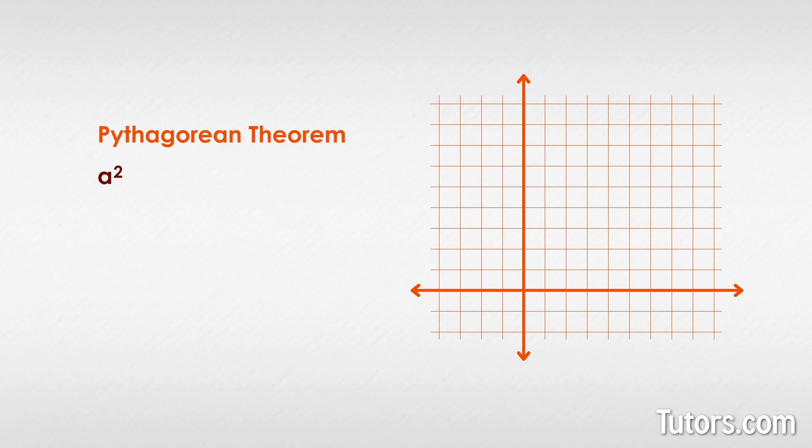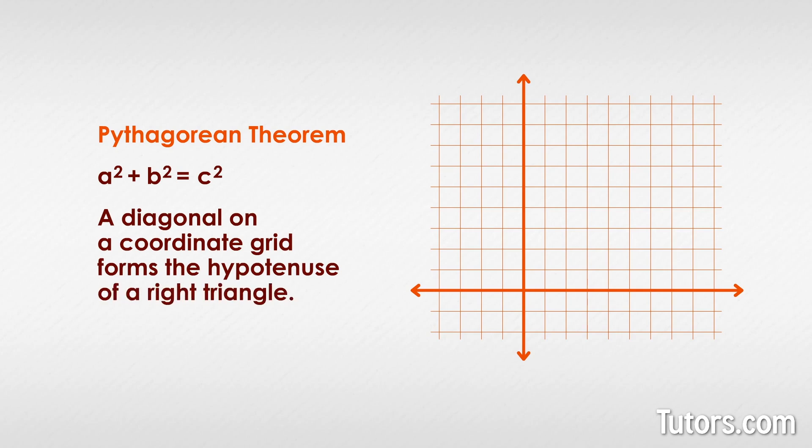The Pythagorean theorem is a squared plus b squared equals c squared for any right triangle. A diagonal on a coordinate grid forms the hypotenuse of a right triangle, so you can quickly count the units of the two sides.